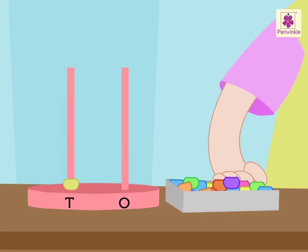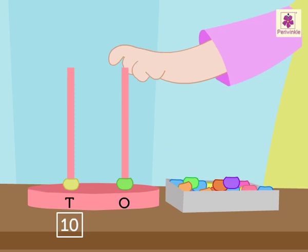First, put one bead in the tens rod which means one ten. Write ten in the box below the tens rod.